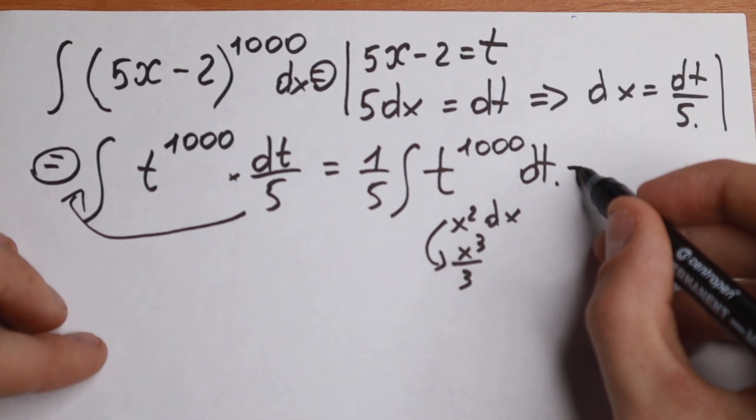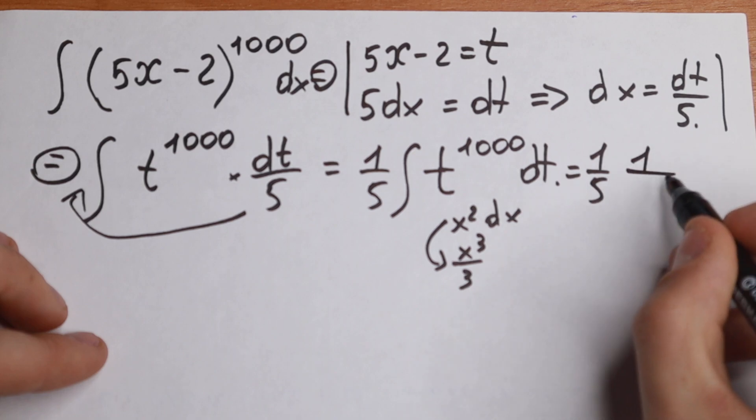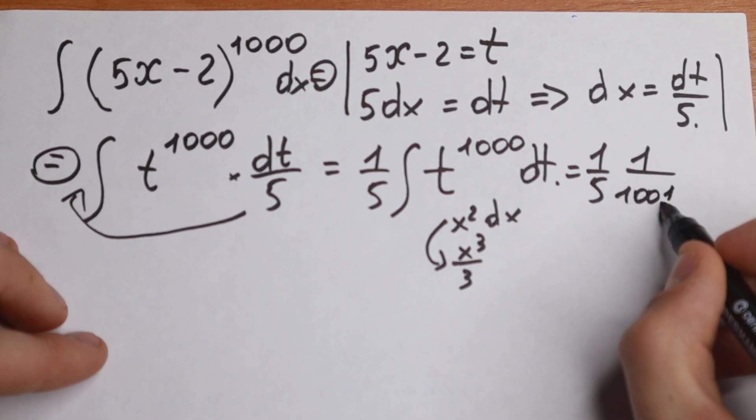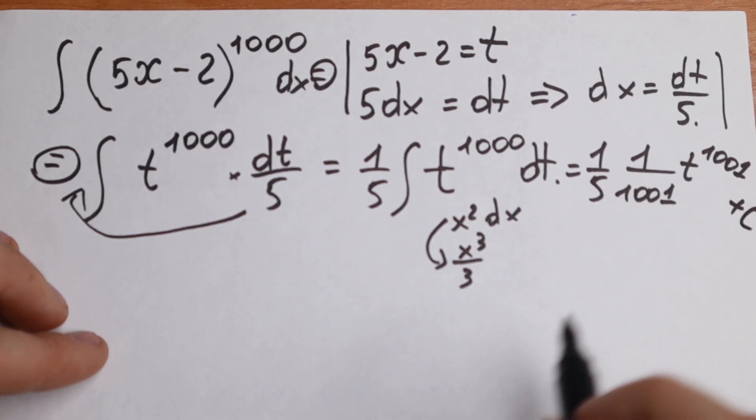Of course, the same. We will have 1 fifth. The constant will be 1 over 1001 times t to the power 1001 plus c.